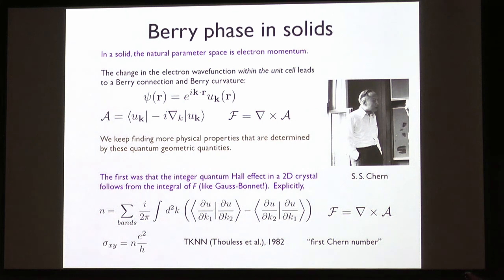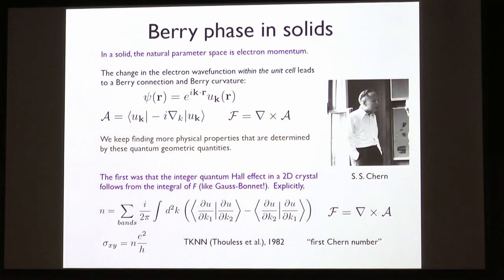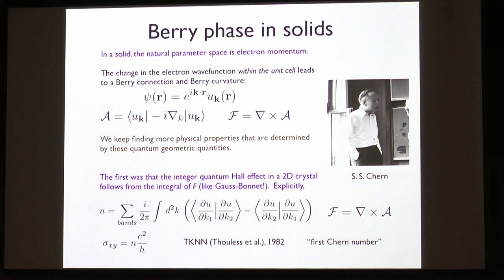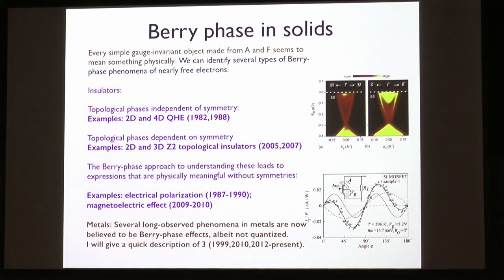The Berry curvature is the simplest object controlling very many things in solids. The original example from Thouless and collaborators is that if you integrate the Berry curvature over a two-dimensional band, you always get an integer — the Chern number — which tells you how much quantum Hall effect you get if you fill that band. The N in the quantum Hall effect has a simple expression in terms of these magic integers. Many old open problems, like the theory of polarization, turn out to be solved by ideas like this.